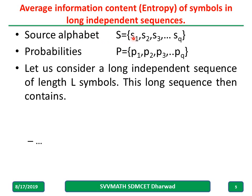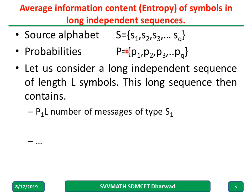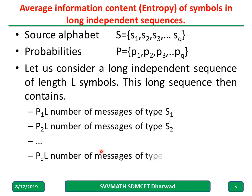Now let us consider a source alphabet s1, s2, up to sq, with respective probabilities p1, p2, p3, up to pq. Let us consider a long independent sequence of length L symbols. How many s1 will there be? How many s2 will there be? It depends on their probability and the total number of symbols generated. There will be p1 times L occurrences of s1, p2 times L occurrences of s2, and so on up to pq times L occurrences of sq.